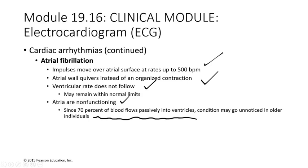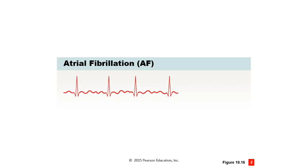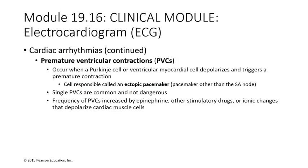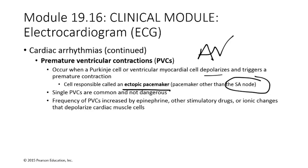Premature ventricular contractions (PVCs) occur when the Purkinje cells or AV node depolarize and trigger prematurely. This can be called an ectopic pacemaker — ectopic meaning out of place — where something other than the SA node is driving the heartbeat.